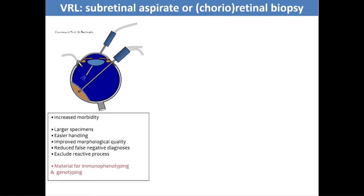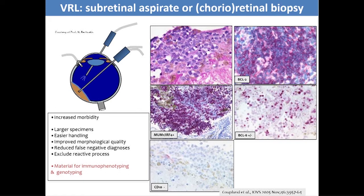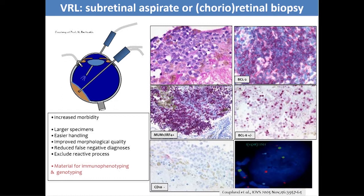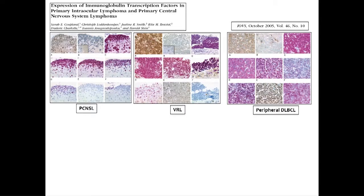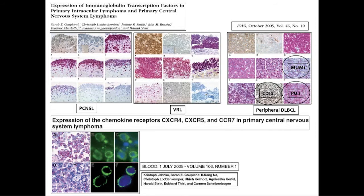If vitreoretinal surgeons send you more material — not just liquid but tissue, such as a chorioretinal biopsy — pathologists can do immunohistochemistry on that. Many years ago, we looked at CNS lymphomas and vitreoretinal lymphomas — and you'll recognise that Justine Smith was involved in this project. We compared them with peripheral diffuse large B-cell lymphomas and looked at particular transcription factors, finding that CNS and vitreoretinal lymphomas, which are essentially very close cousins, differ in their expression of transcription factors compared to systemic diffuse large B-cell lymphomas. They also express particular chemokine receptors, which we think may explain why CNS lymphomas and vitreoretinal lymphomas tend to stay within the CNS system and hardly ever spread externally into the lymph nodes.